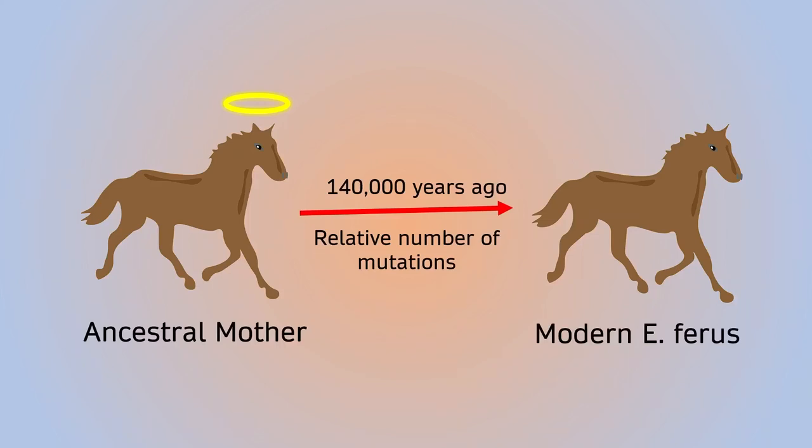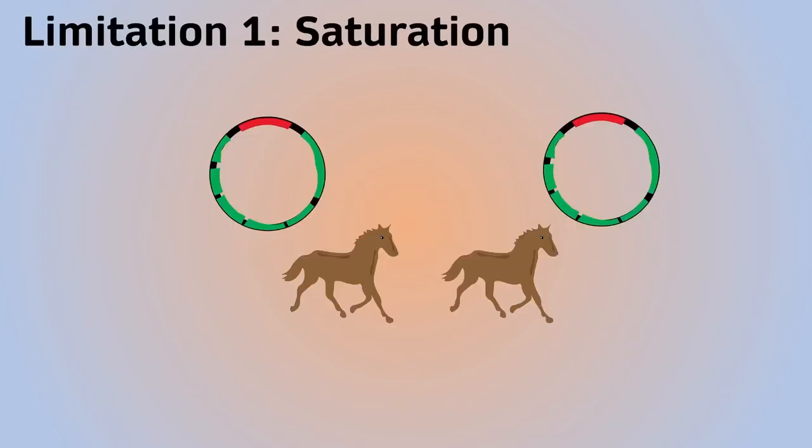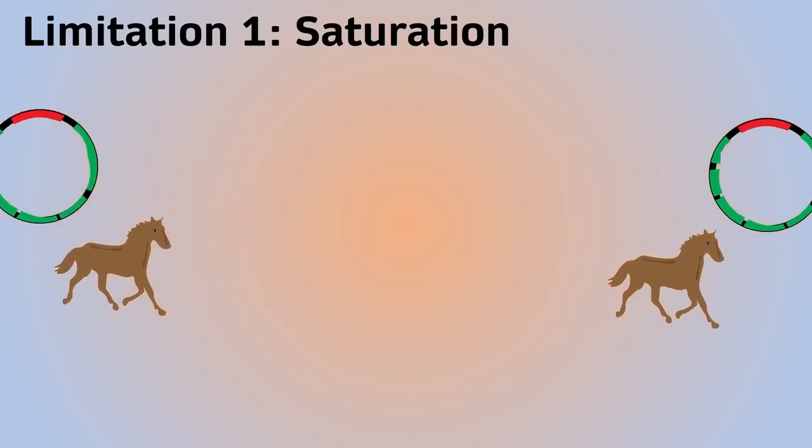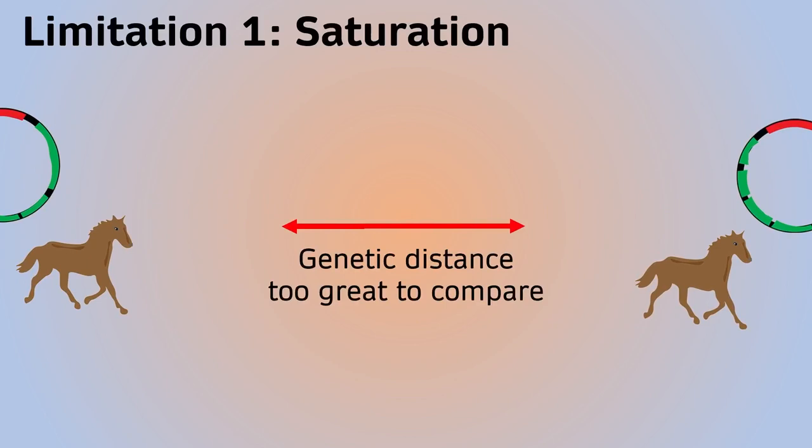Unfortunately, there are limitations to this approach. Firstly, the more genetically distinct two haplotypes are, the more likely mutations are to double up and obscure the true relationship between the two. This is termed saturation.